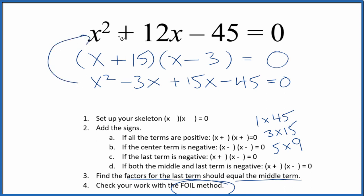Now this is the exact same thing as we started with. So we've factored this equation, x squared plus 12x minus 45, correctly.